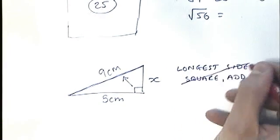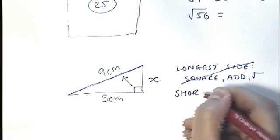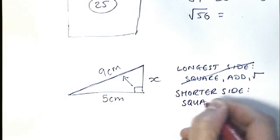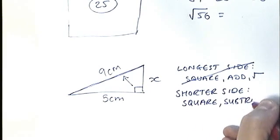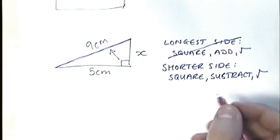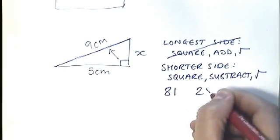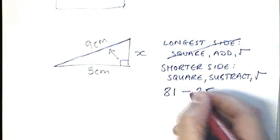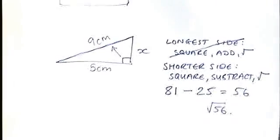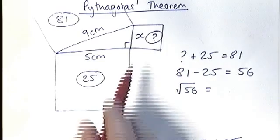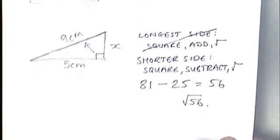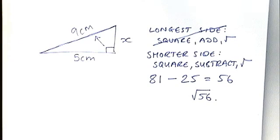However, in this case I'm not finding the longest side — I'm finding one of the shorter sides. In that case, you square the numbers you see, subtract them, and then square root. Let's check this gives the same answer: 9² = 81, 5² = 25, subtract to get 56, then square root 56. That's exactly the same result. We didn't need to draw squares — we simply said: finding a shorter side, so square the numbers, subtract, square root.